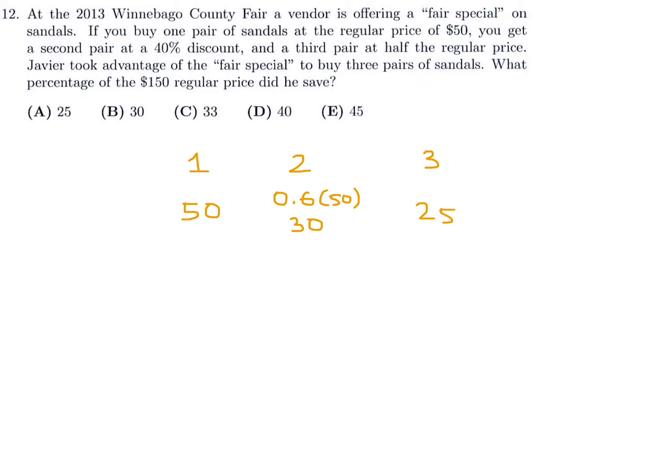So in total he paid fifty plus thirty plus twenty-five for the three sandals, and that is a hundred and five dollars. So they're saying when you take a hundred and five and compare it to a hundred and fifty, what is the percent discount? Well this is seventy percent. So that means he paid seventy percent. So his discount was thirty percent. So a discount of thirty percent on the regular price, which would have been a hundred and fifty. So number twelve, the answer is B.